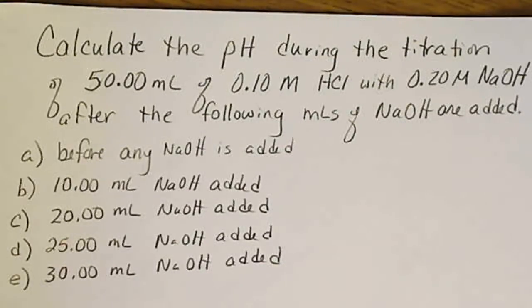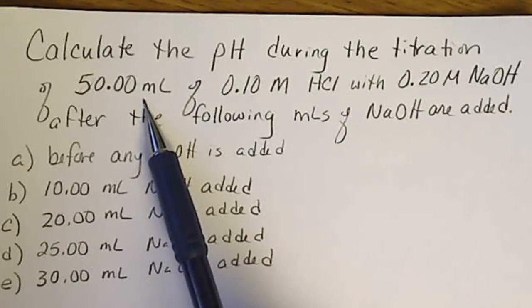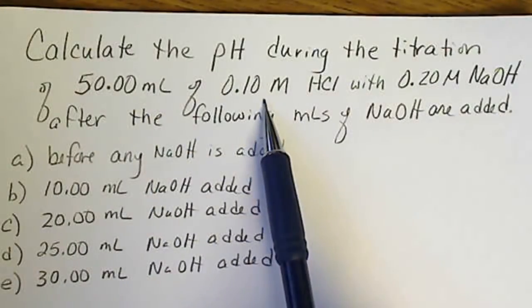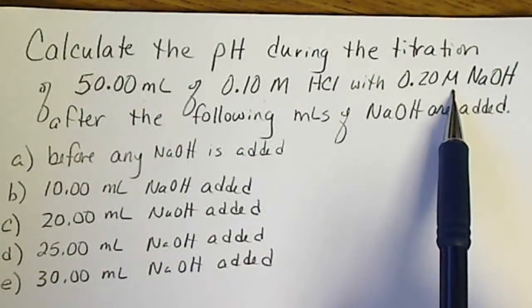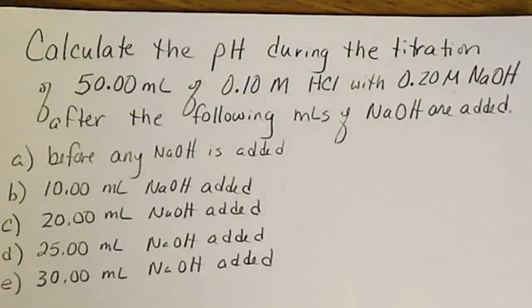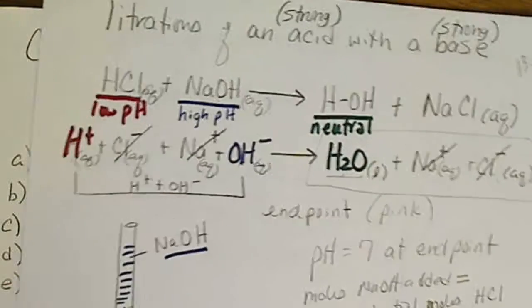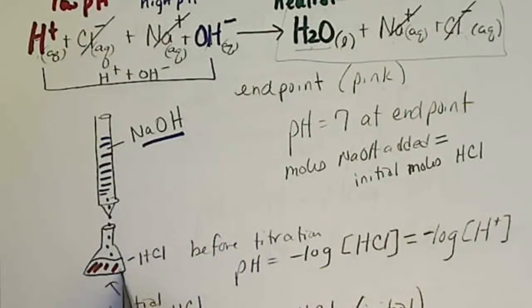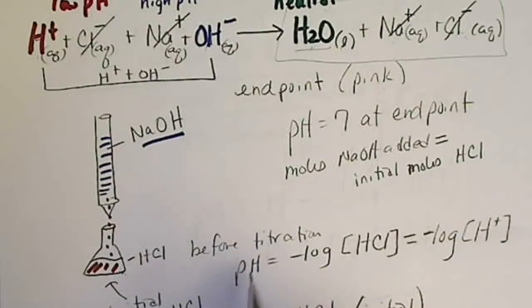In order to do this, we have to know the exact volume of hydrochloric acid that we have and what its concentration is, and then the concentration of the sodium hydroxide — the volume of the sodium hydroxide is going to vary. So before the titration, we can calculate its pH by just taking the negative log of the concentration of the acid.